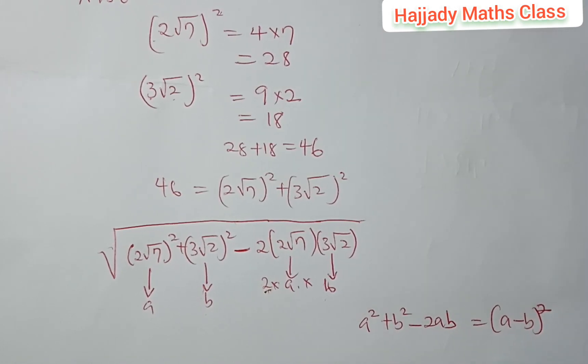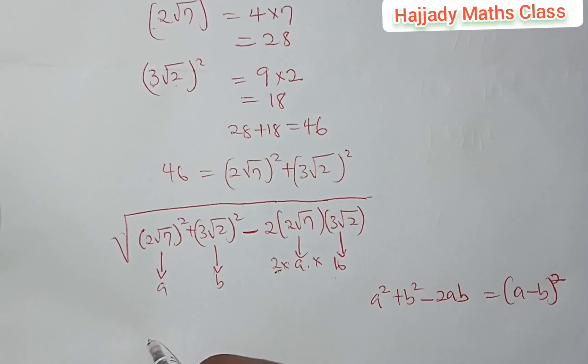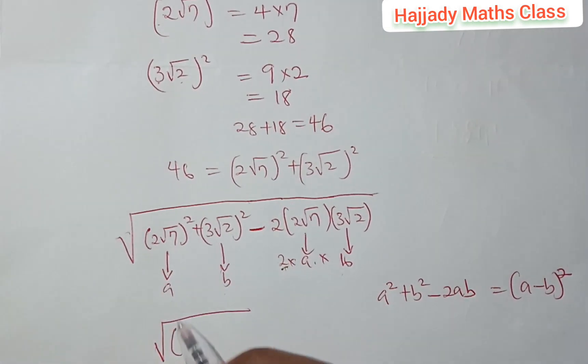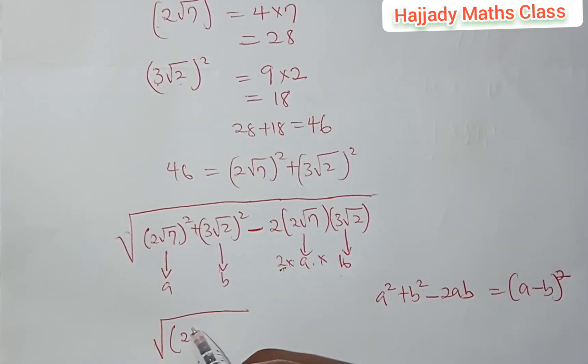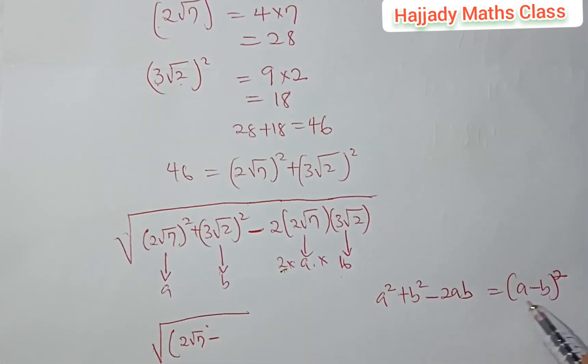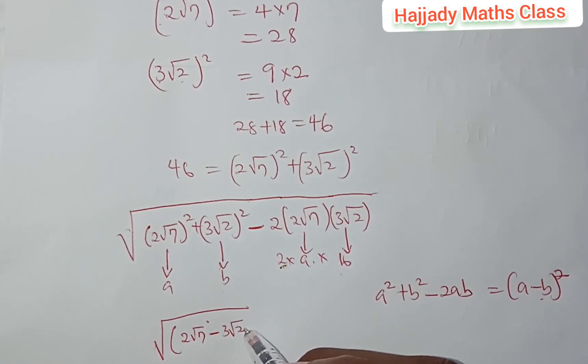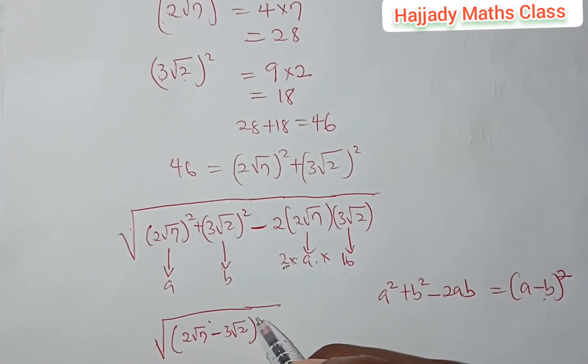It is equivalent to having (A - B)². It shows that this is equivalent to our A, which is 2√7, minus our B, which is 3√2, all squared.